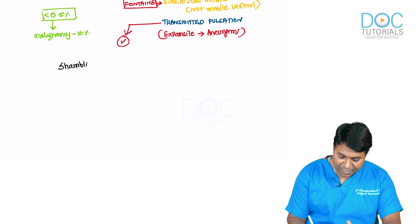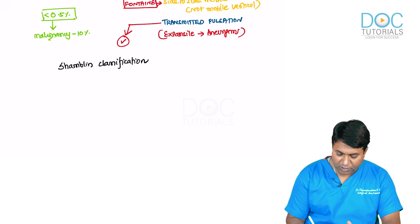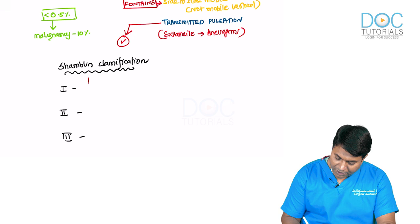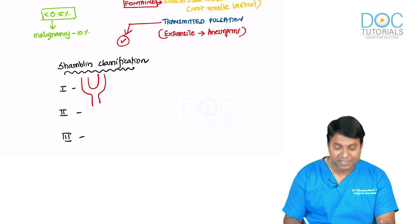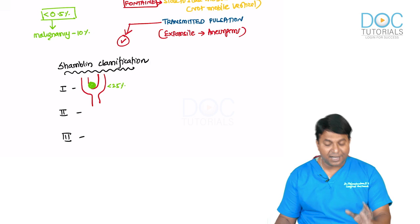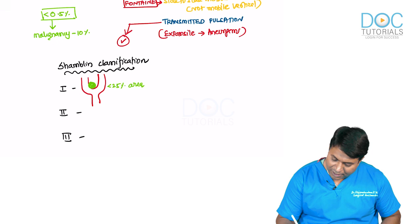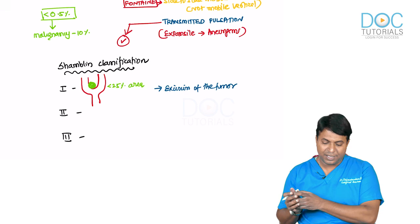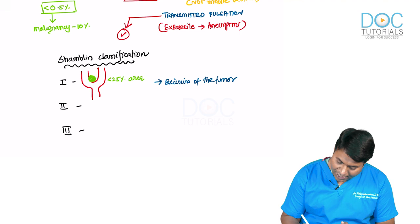The carotid body tumor has a classification known as Shamblin classification, which helps in management. In Shamblin Type 1, the tumor is adherent to the artery in less than 25% of the area — excision of the tumor alone is enough. You can casually dissect and remove it.